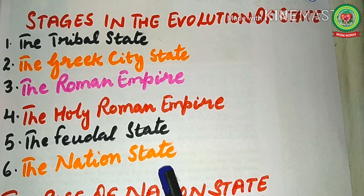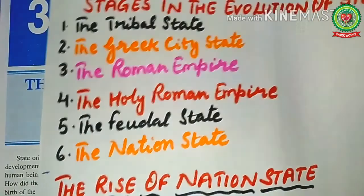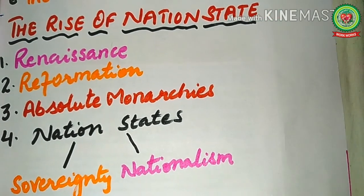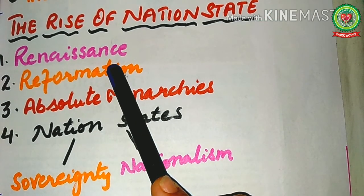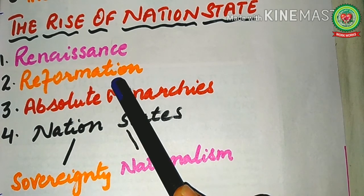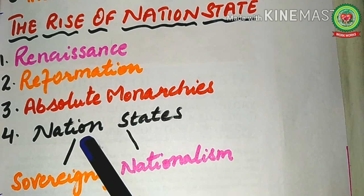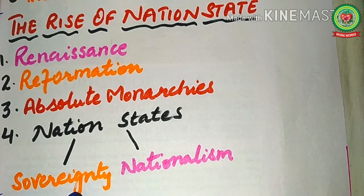Now I will discuss the rise of the nation state in detail. Under the impact of the Renaissance and the Reformation, there was the birth of absolute monarchies. The birth of strong monarchies led to the emergence of nation states in various parts of Europe. Later the concept of sovereignty also got recognition, and sovereign states maintained relations with each other to secure their national interest.